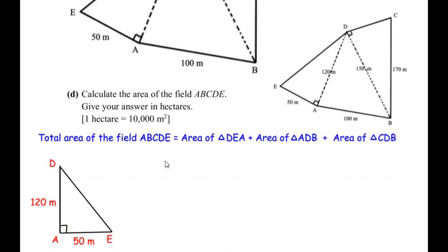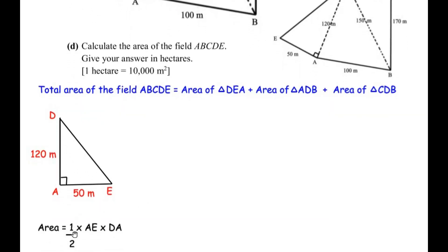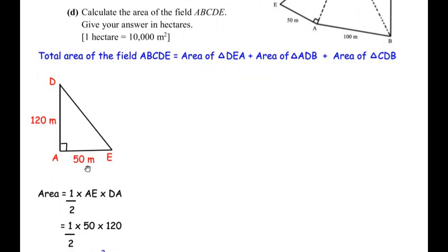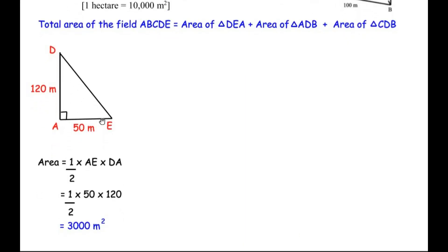Starting with right angle triangle DEA: DA is 120 and AE is 50 meters. Using area equals one half times base times height, where the base is AE and the height is DA: area equals one half times 50 times 120, which gives 3000 square meters.